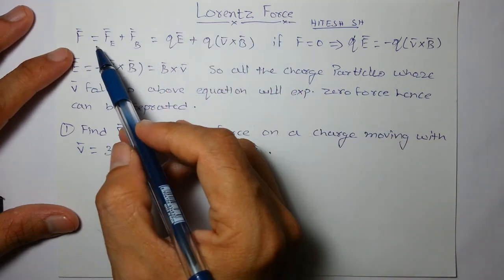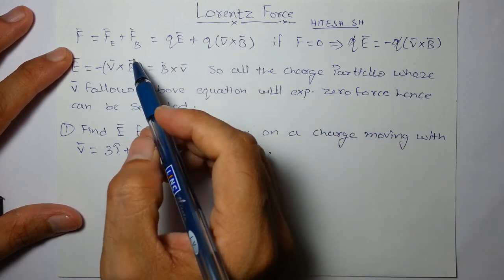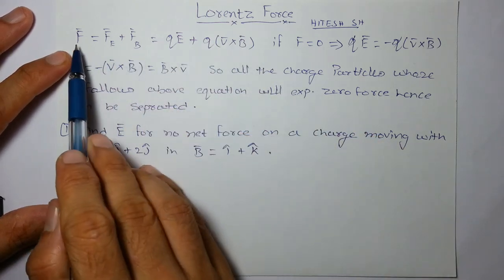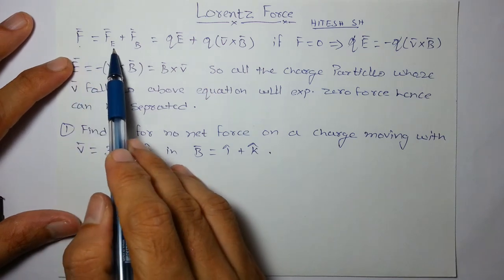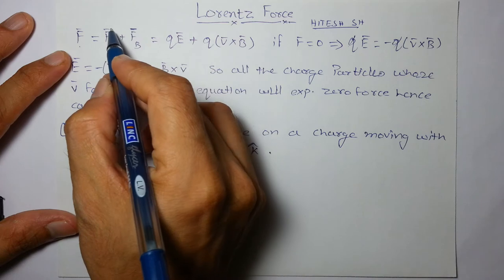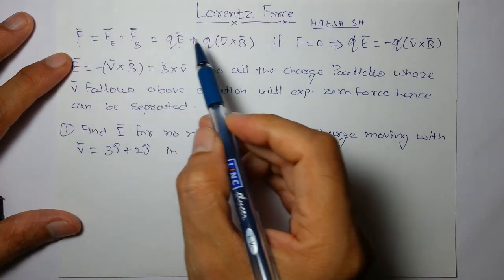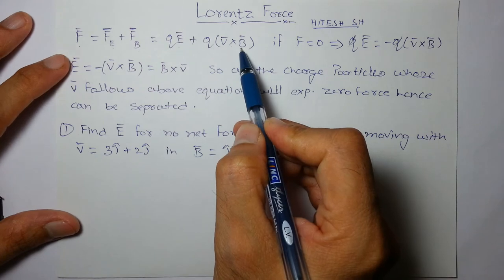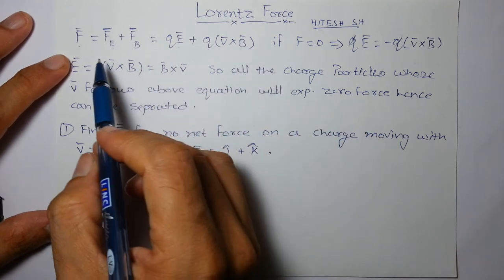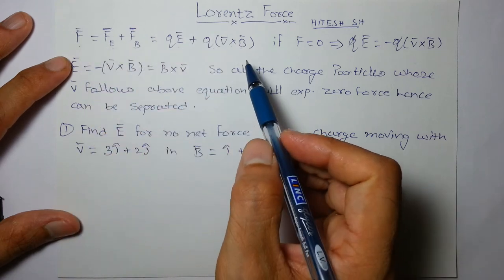So F is equal to, Lorentz force is nothing but it's a sum of electric as well as magnetic force. So net force is electric force plus magnetic force. These are vectors, so we'll add them vectorially. QE is the electric force, QV cross B is the magnetic force. So if these are given, we can find the Lorentz force or the net force.